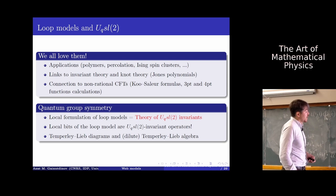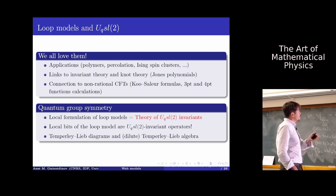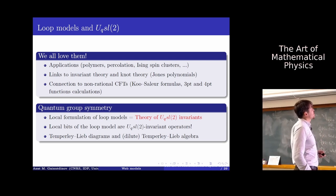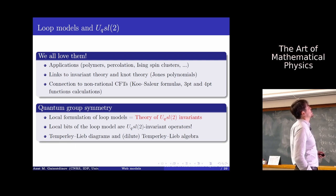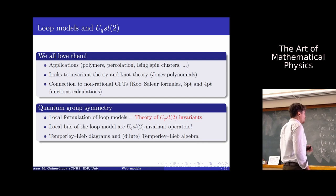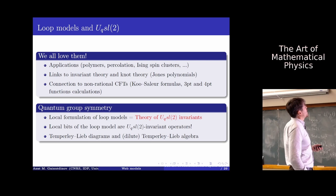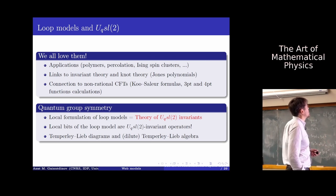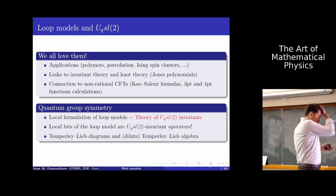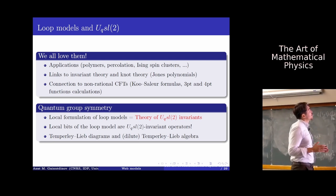Recently, people — including Hubert and others — computed three-point and four-point correlation functions. I think of myself as a representation theorist. For me, the interest in loop models is that they are deeply connected to quantum group theory.